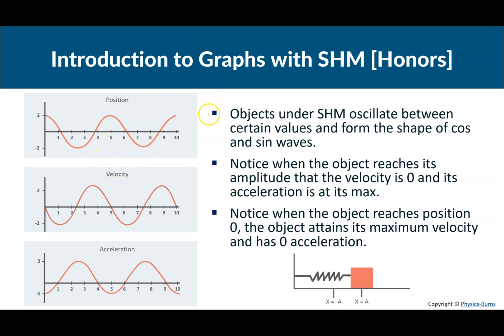Objects under simple harmonic motion oscillate between certain values and form the shape of cosine and sine waves. When something is going back and forth, certain values are the same. Maybe this is position negative three, maybe this is position three, and it oscillates between negative three and three — that looks like a sine wave or cosine. Same thing with the speed: maybe it's five meters per second at center and zero at the ends, going back and forth like that.